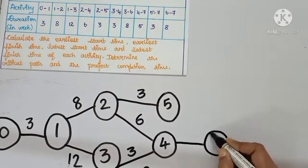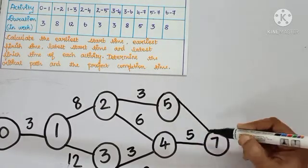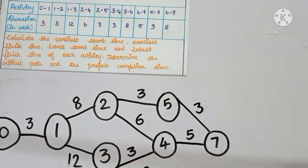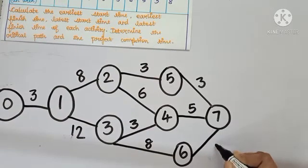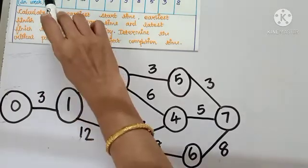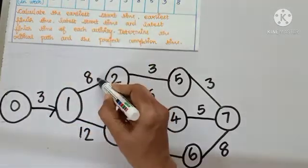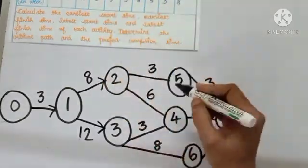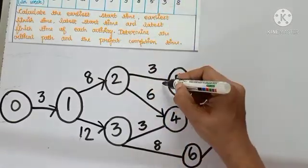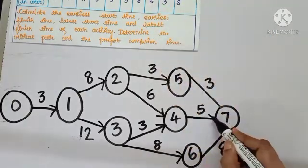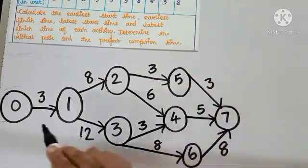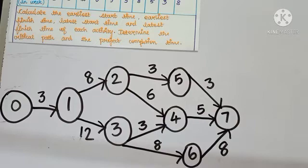Four to seven, duration five; five to seven, duration three; six to seven, duration eight. Reading the diagram with all arrow marks: zero to one, one to two, one to three, two to four, two to five, three to four, three to six, four to seven, five to seven, six to seven — the diagram is complete. Now we need to calculate the E and L values — earliest starting time and latest finishing time.